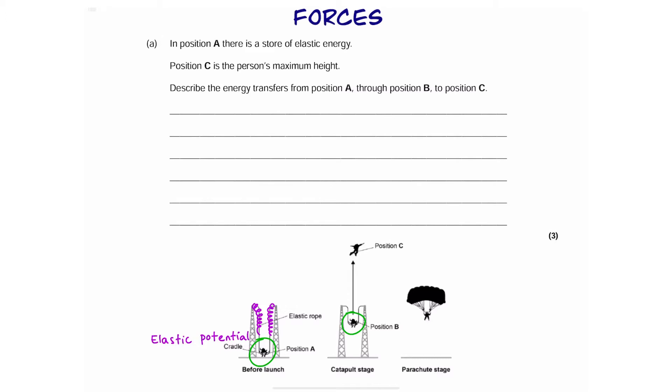In position B, the person has moved up. So, they're a little bit higher. And also, they're speeding up. They're moving faster. So, the energy transfer from A to B is that the kinetic energy and gravitational potential energy has increased. And all of this energy has come from the elastic store. So, the elastic store or the elastic potential energy has decreased.